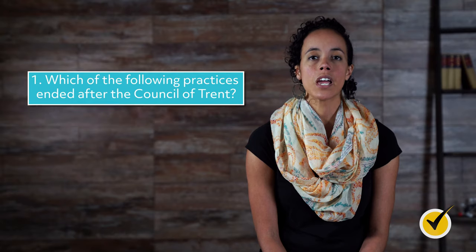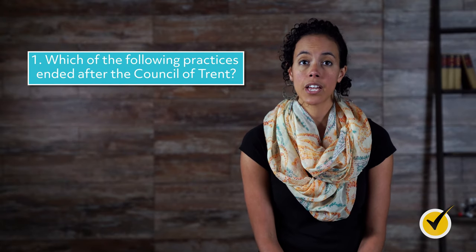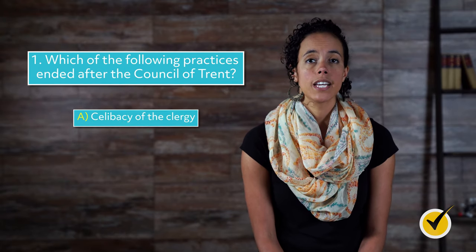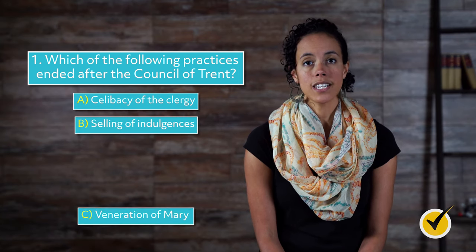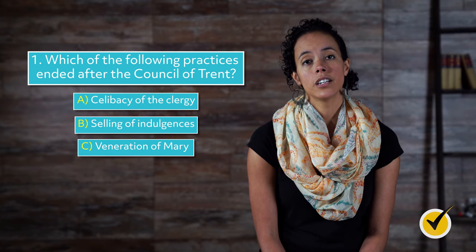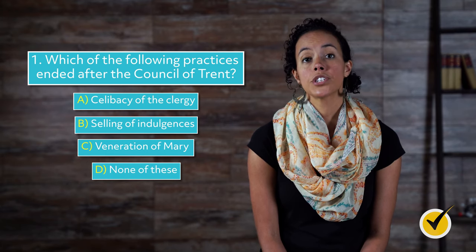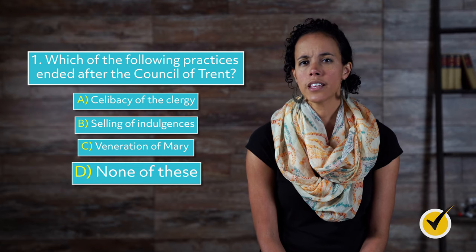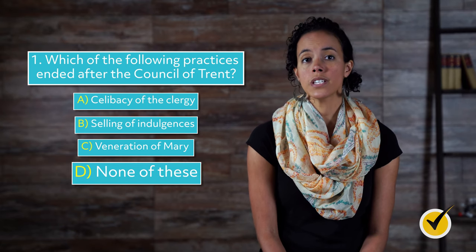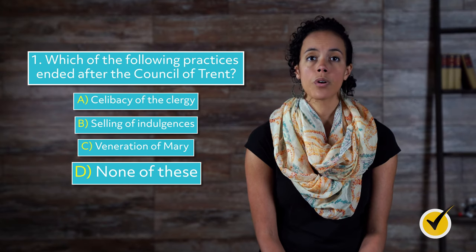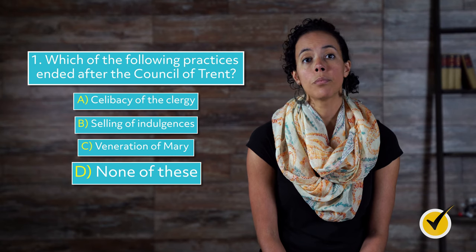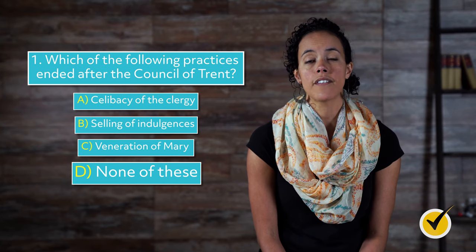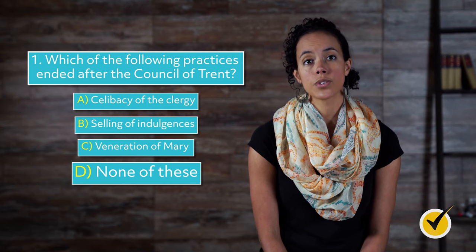Let's look at a couple of review questions before we go. Number one: Which of the following practices ended after the Council of Trent? A. Celibacy of the clergy. B. Selling of indulgences. C. Veneration of Mary. Or D. None of these. The answer is D. Though the selling of indulgences was one of the main points of contention against the Church, the act was reformed rather than banned by the Council of Trent. The practice was further modified by Pope Pius V in 1567, a few years after the Council's final session.